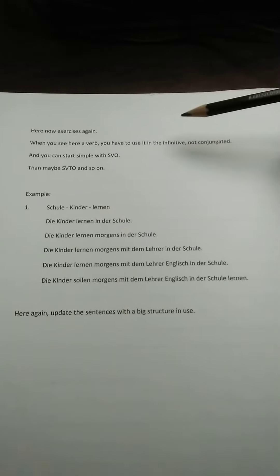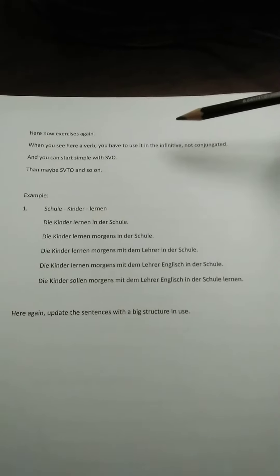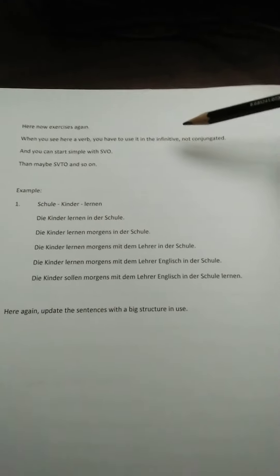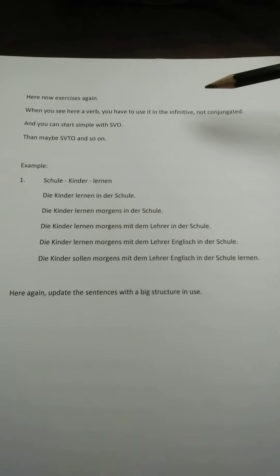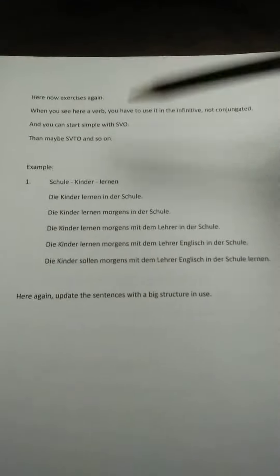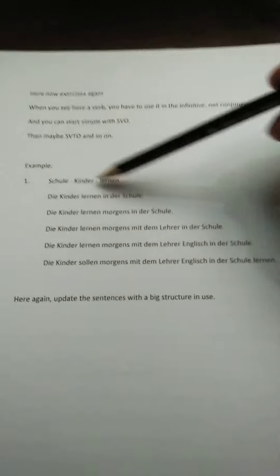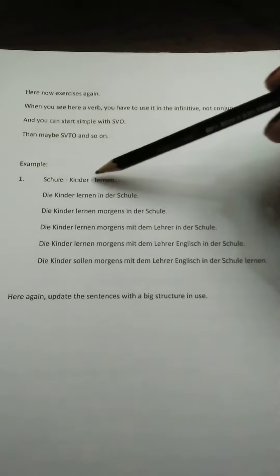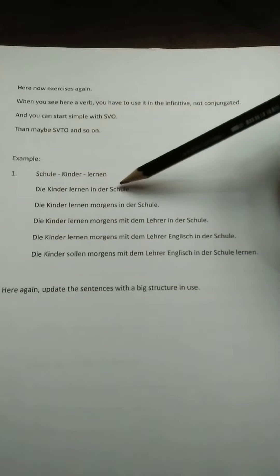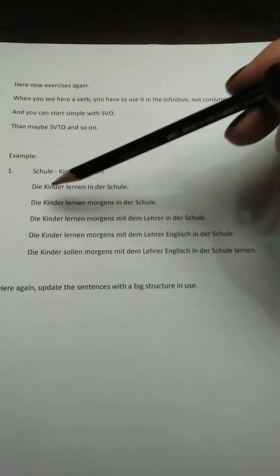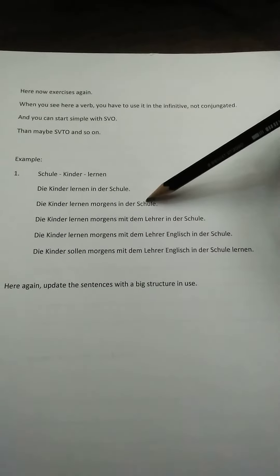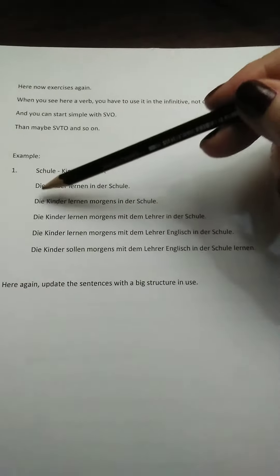Here are some examples and exercises on how you can start. This is a good idea — start with a very simple form: subject, verb, time. Like 'die Kinder lernen in der Schule.' And I told you already we have subject, verb, time, object.